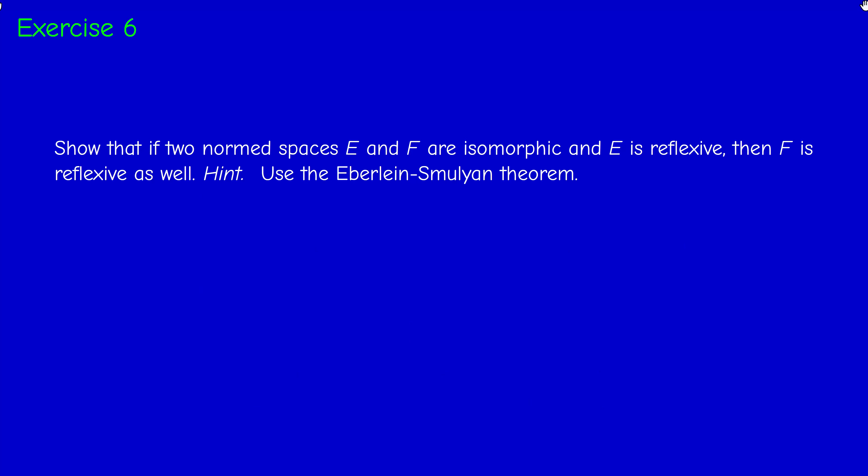Exercise 6 is an expected result: two normed spaces, if two normed spaces are isomorphic, then they are both simultaneously reflexive or not — if one of them is reflexive, then the other is necessarily reflexive. So consider: since they are isomorphic, there exists an isomorphism T from E to F.